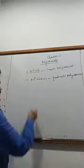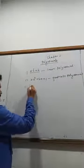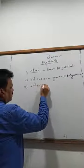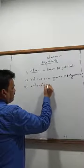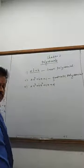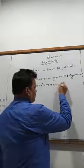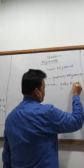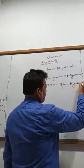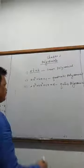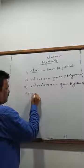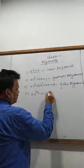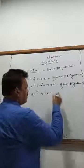Then, I write AX cube plus BX square plus CX plus D. This is called a cubic polynomial. But when I write AX to the power 3/2 plus BX plus C, that is not a polynomial.